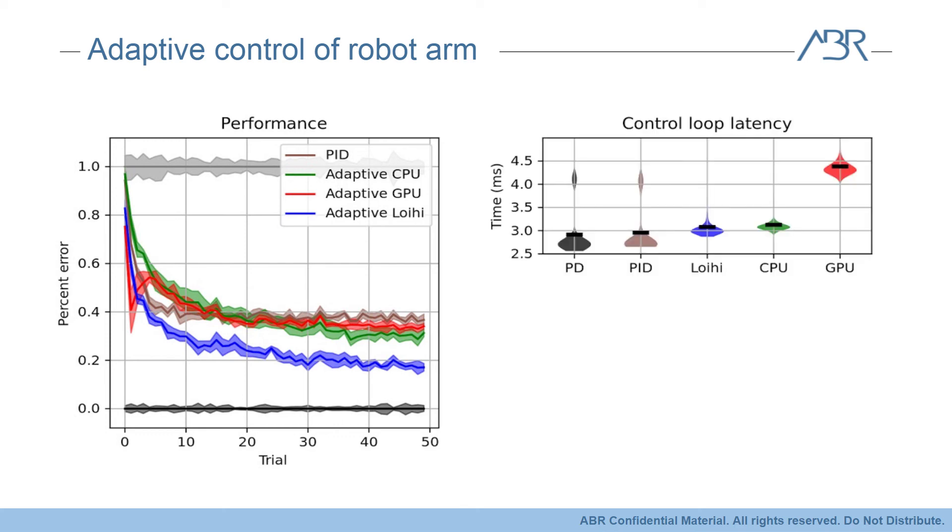When we look at the latency of the different implementations, it's pretty much as you might expect, with the PD and PID implementations running the fastest, then Loihi, then CPU, and then GPU, all simulating neurons. It's worth noting here that we're only actually simulating a thousand neurons while measuring latency on these runs. So, while the Loihi and the GPU latency won't change that dramatically as we start scaling up, the CPU latency will actually start growing quite quickly with the network size.